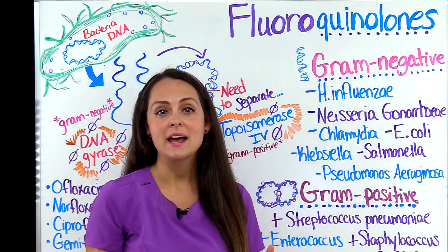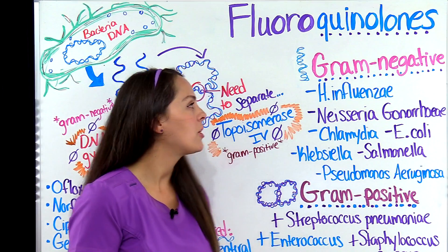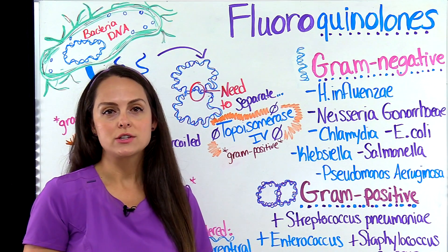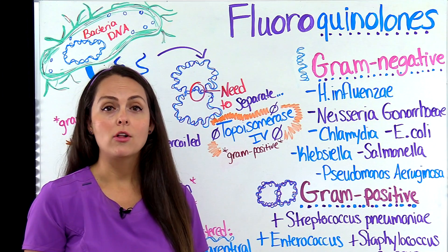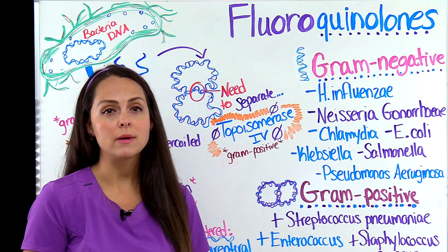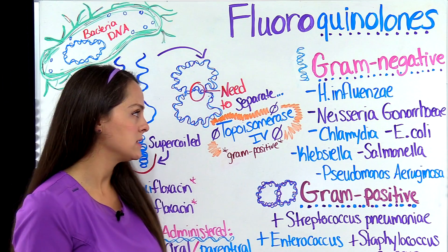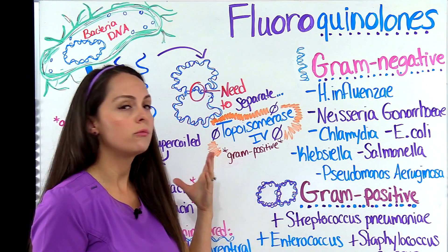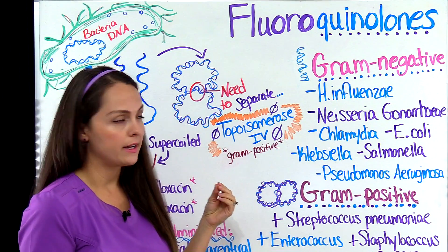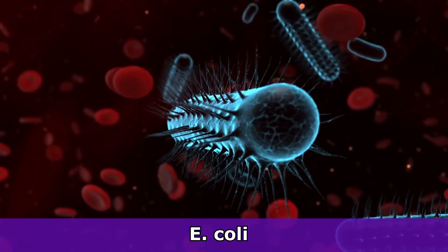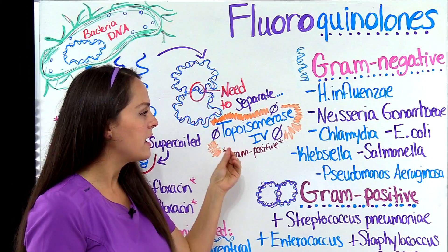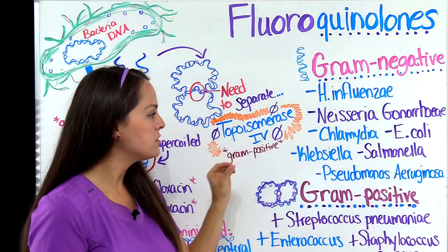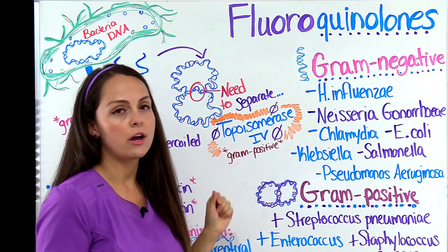Some of the gram-negative bacteria they can target includes Haemophilus influenzae, which is a cause of epiglottitis in young children and other respiratory infections. They can also target Neisseria gonorrhea, which causes gonorrhea, Chlamydia, E. coli, Klebsiella pneumoniae, Salmonella, and Pseudomonas aeruginosa.